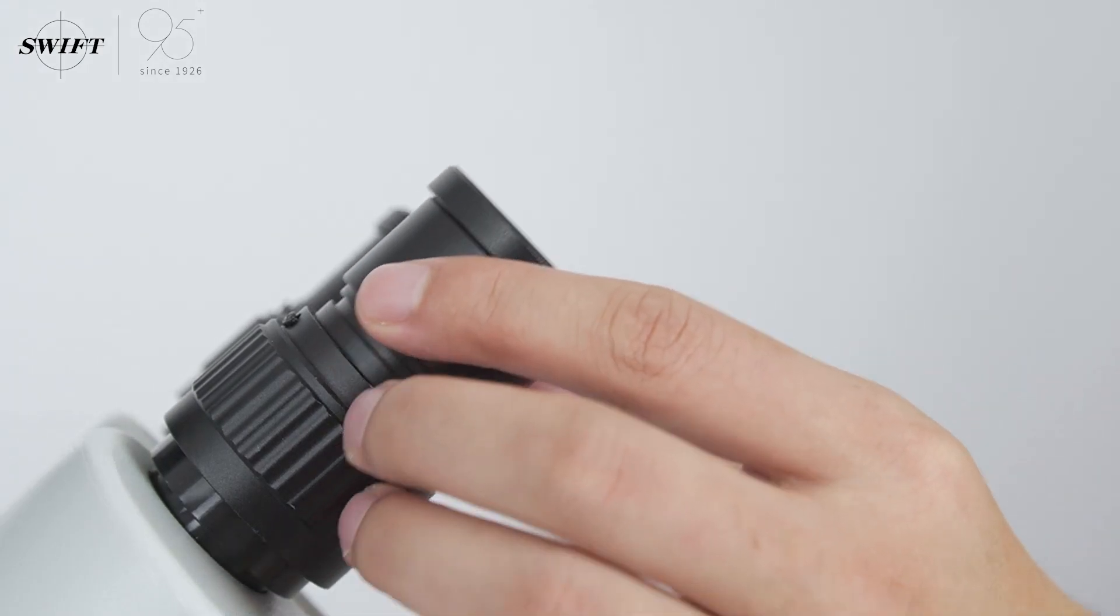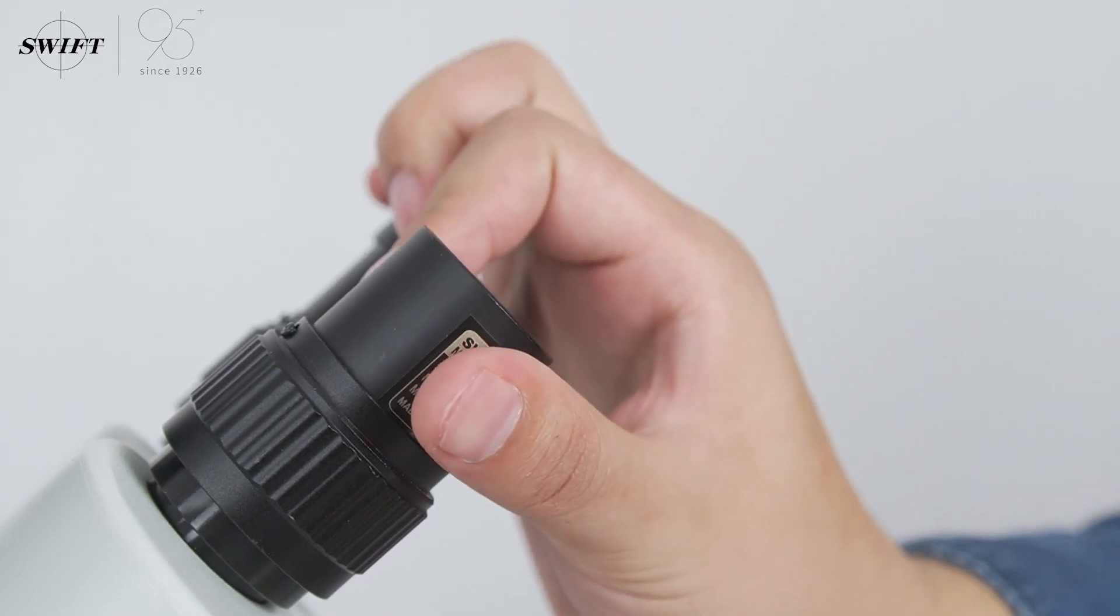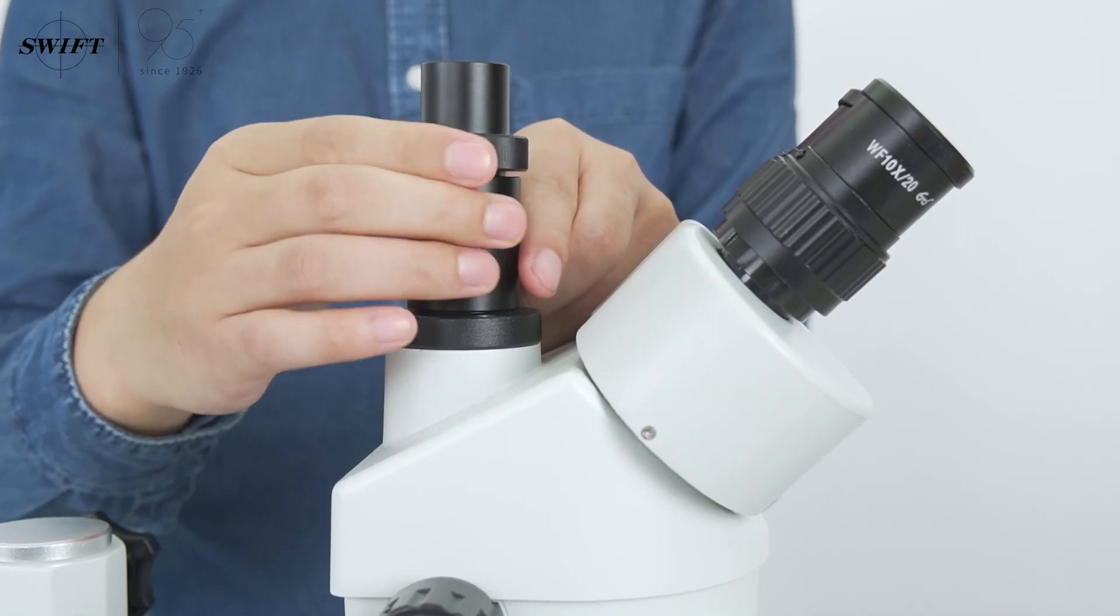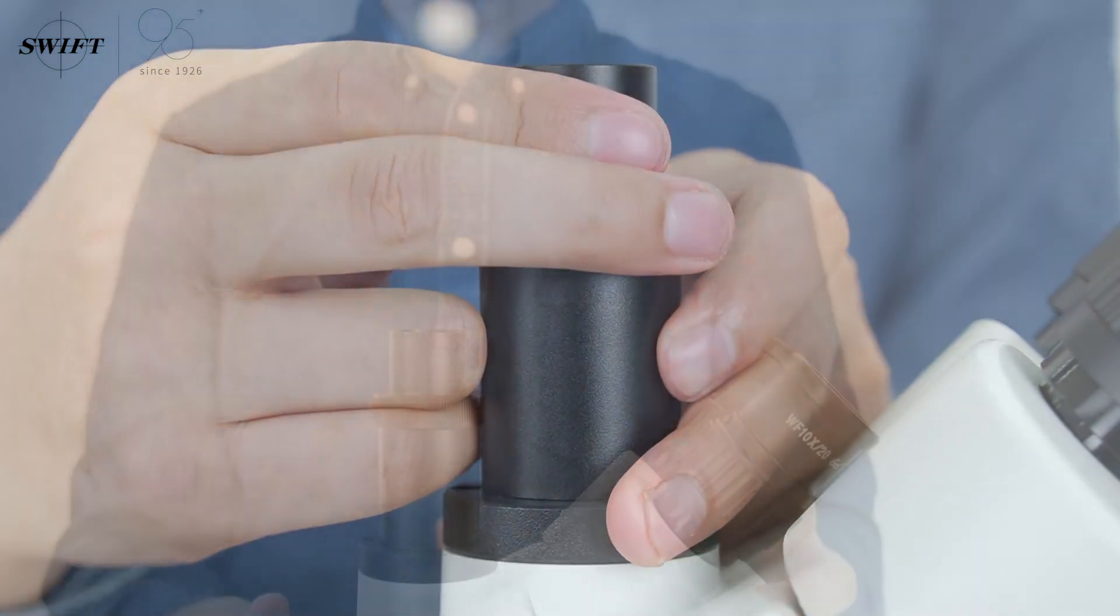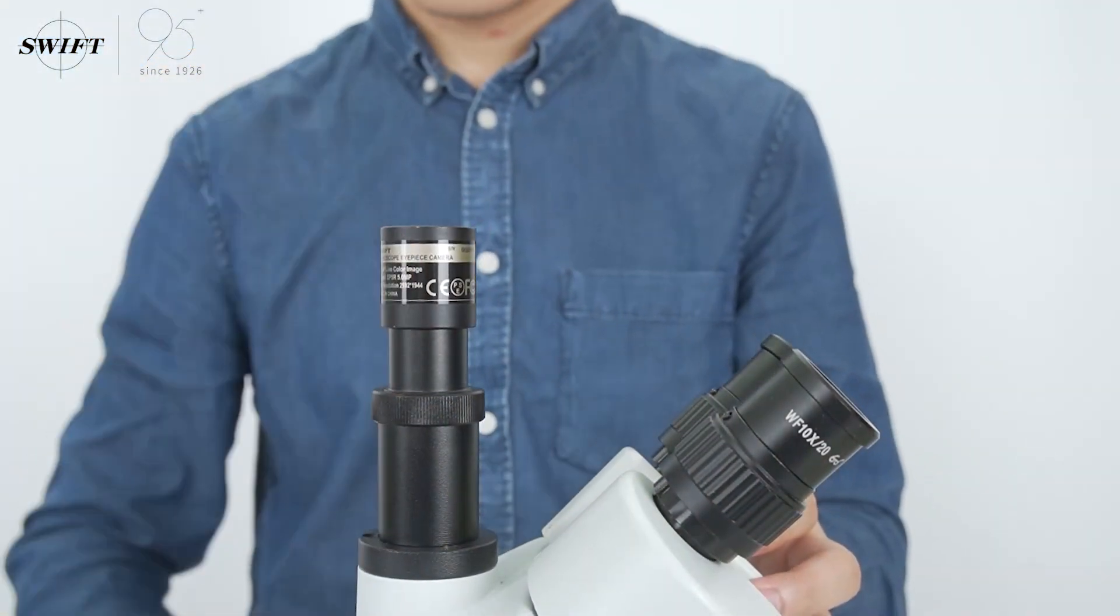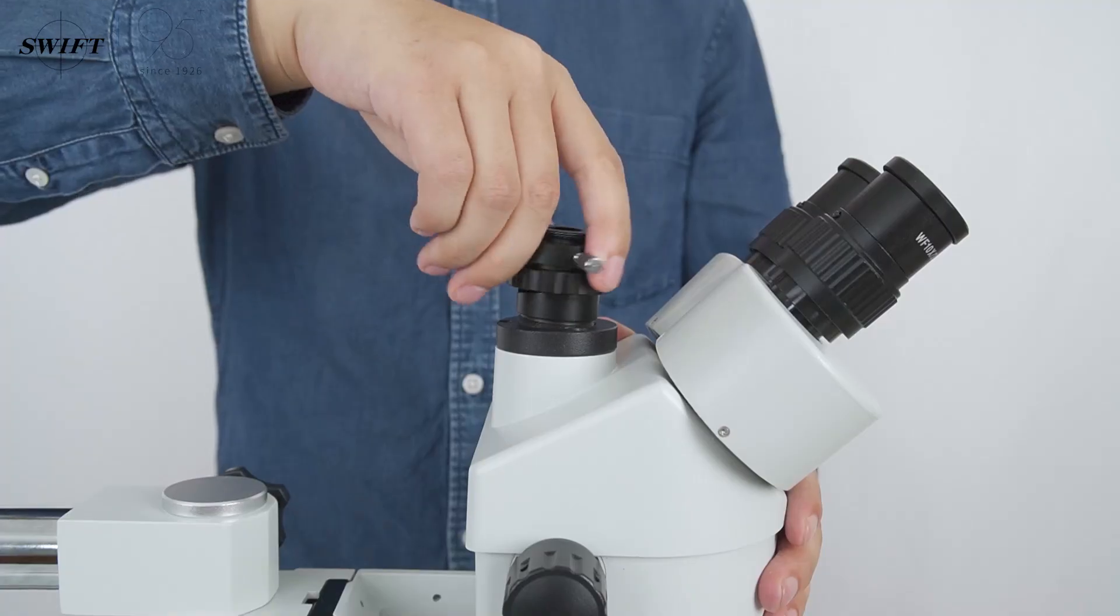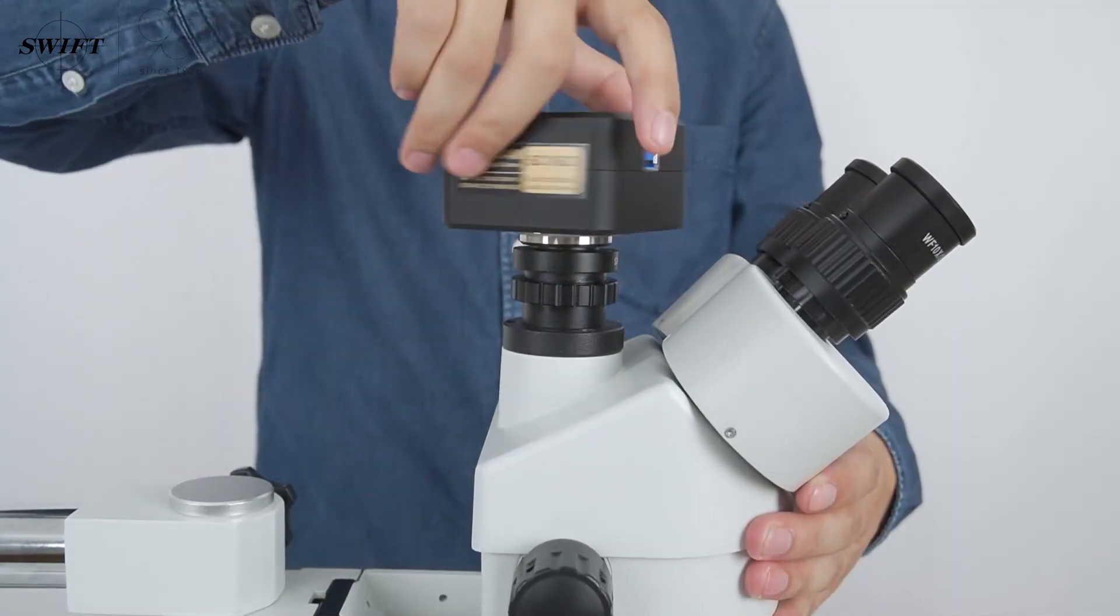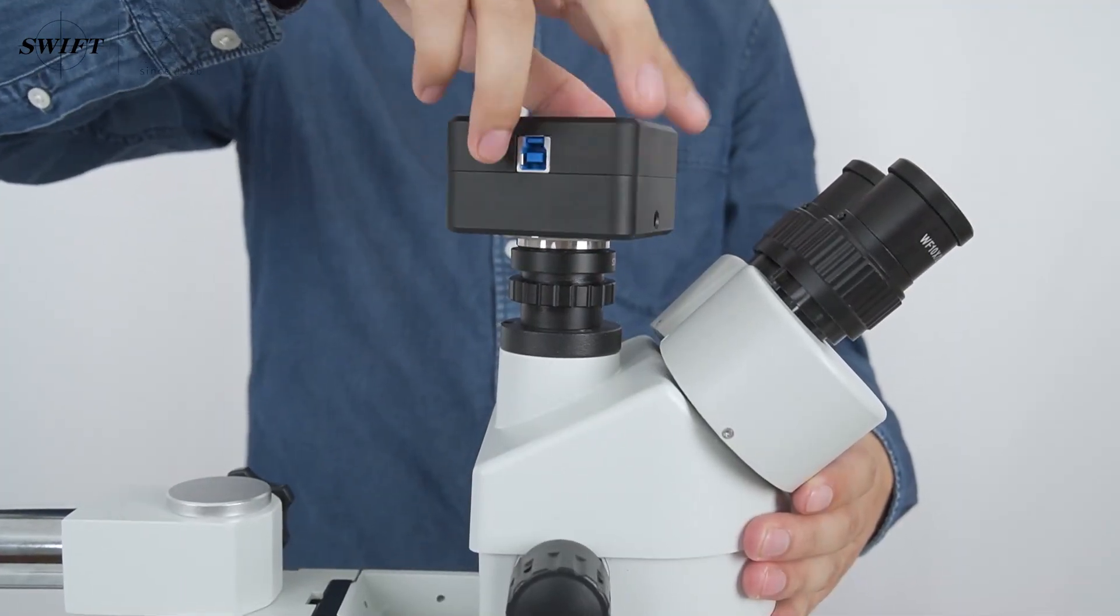First, take out the observation eyepiece and insert the electronic eyepiece, then connect the data cable. Use the trinocular interface to connect the electronic eyepiece and install the connecting ring. Finally, install the digital camera and adjust the connecting ring to make the images observed by the camera and eyepieces parfocal.